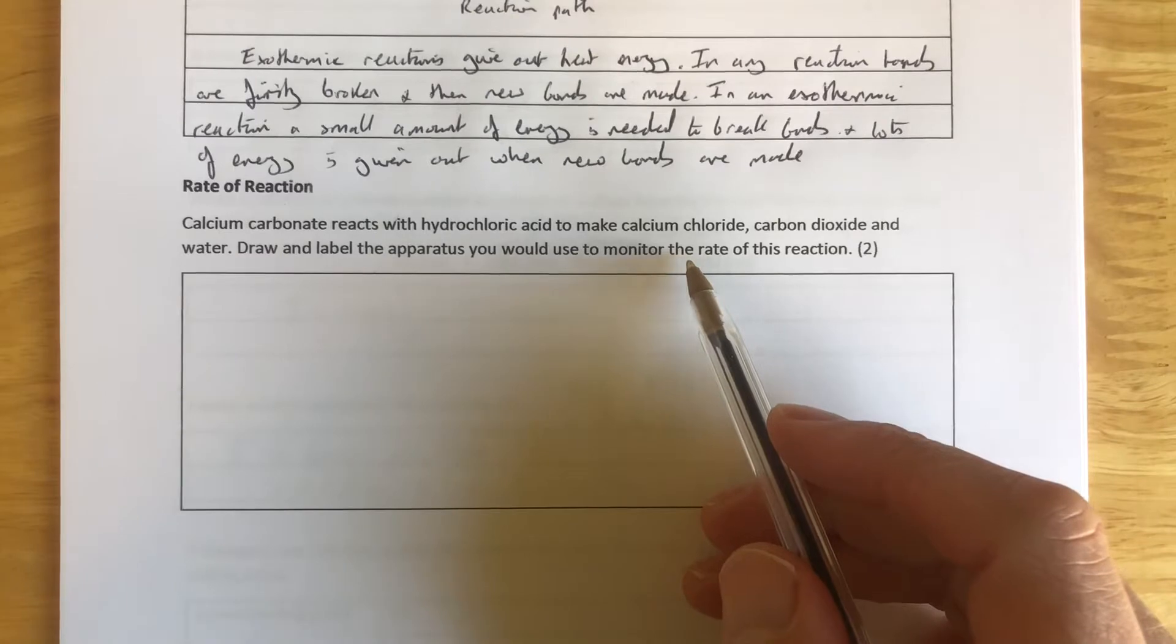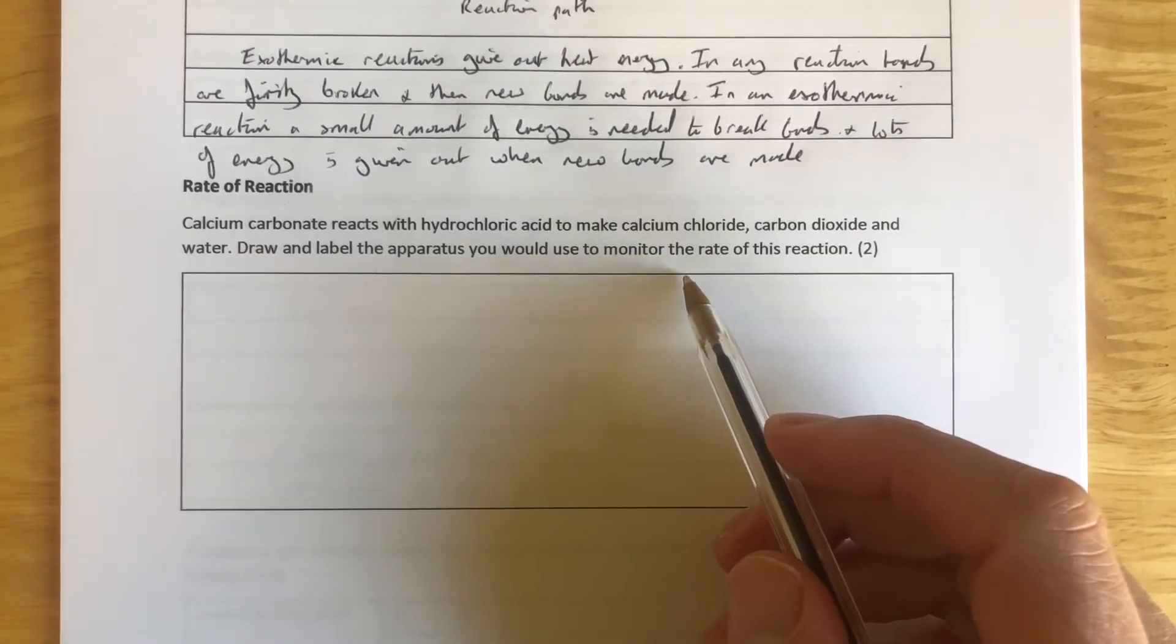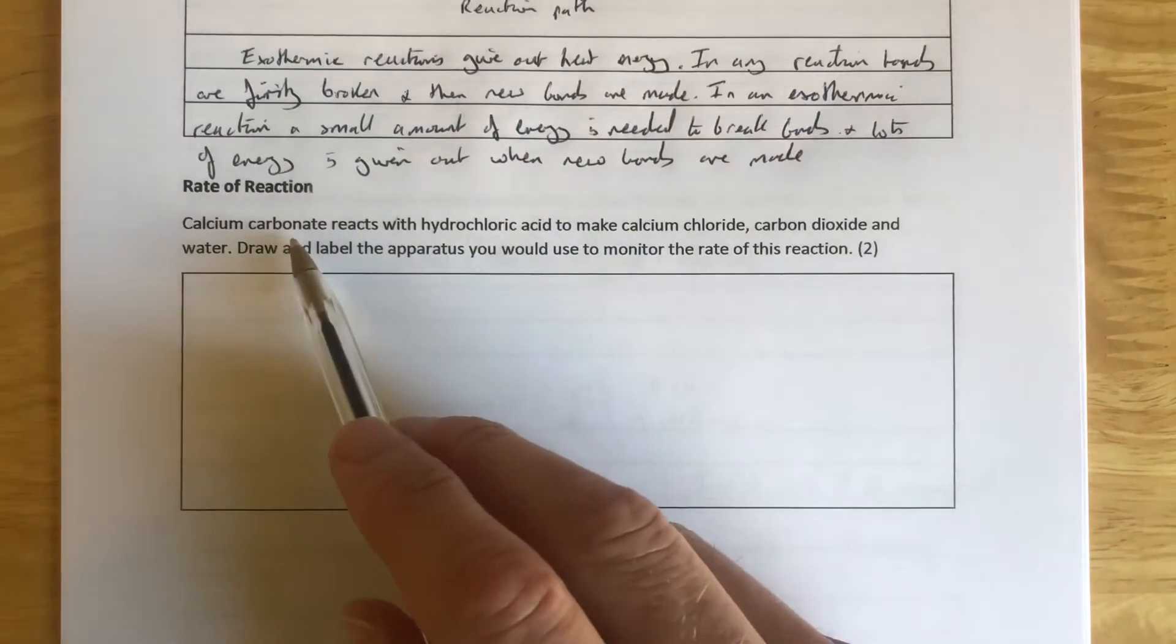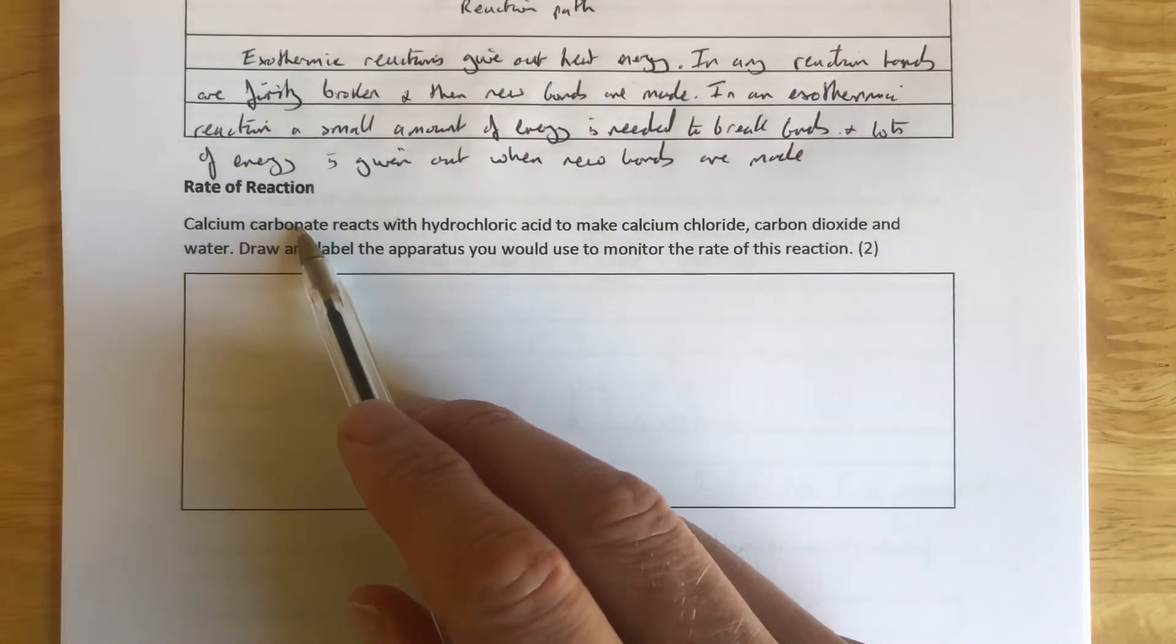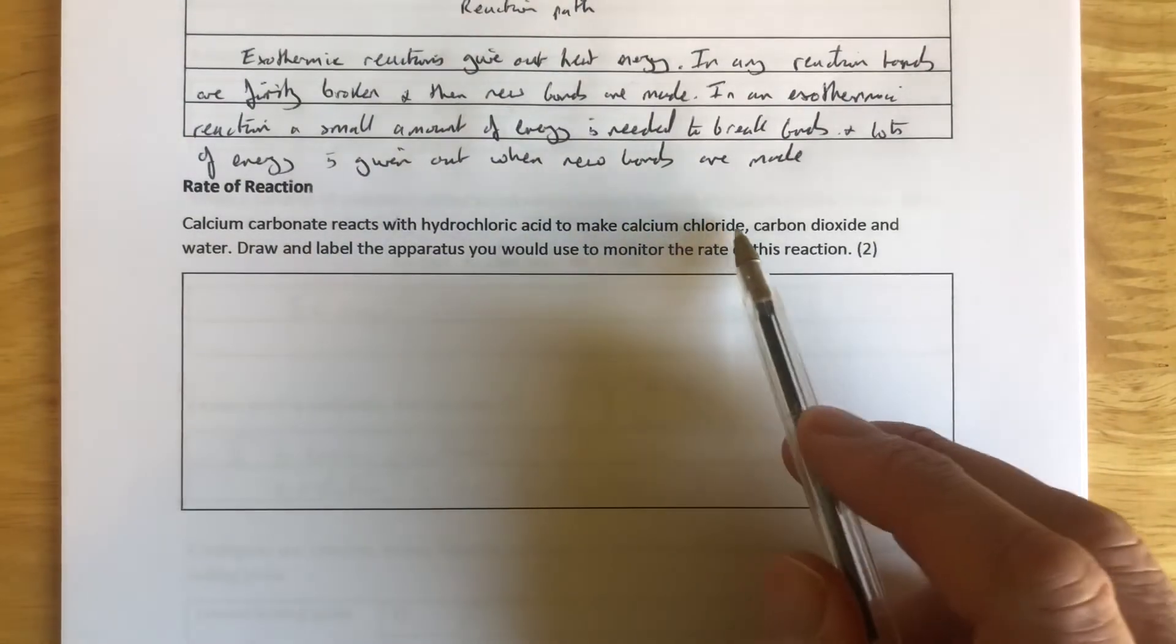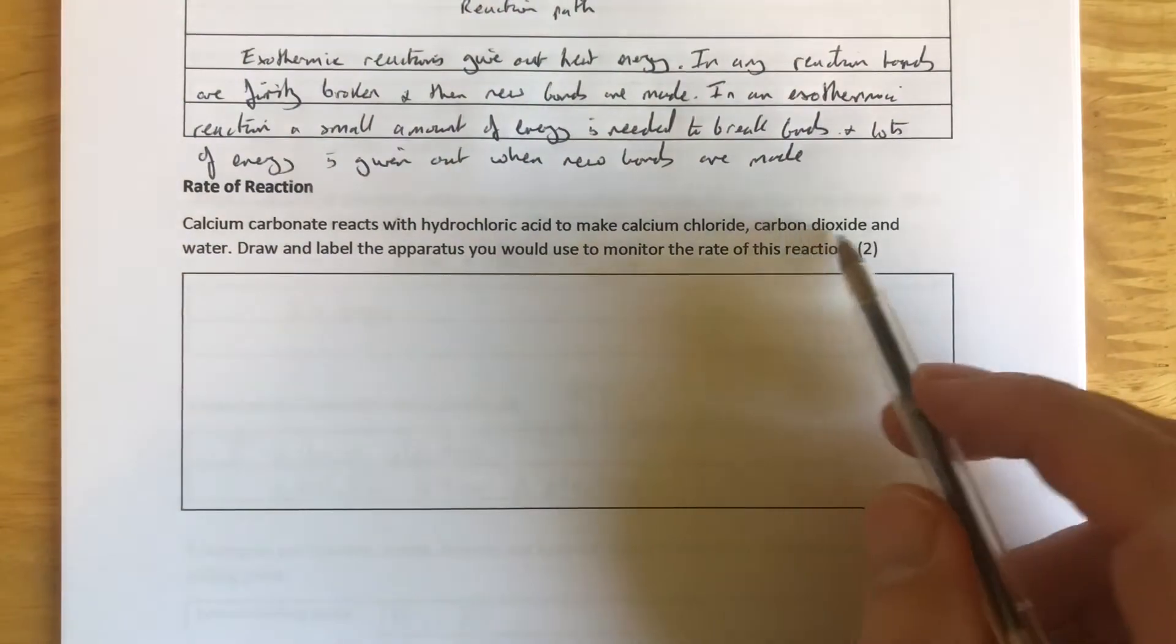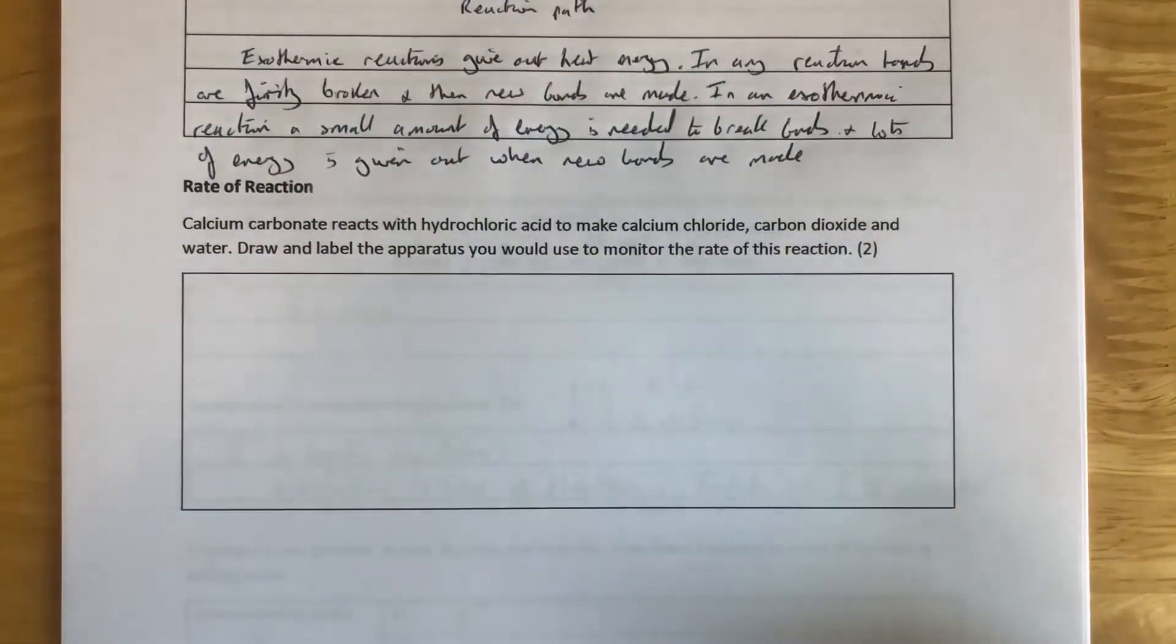Now this reaction is taking calcium carbonate, which is solid, and hydrochloric acid as reactants to make calcium chloride that's a solution, carbon dioxide that's a gas, and water as a liquid obviously. So the gas being given off is probably the easiest thing to monitor.